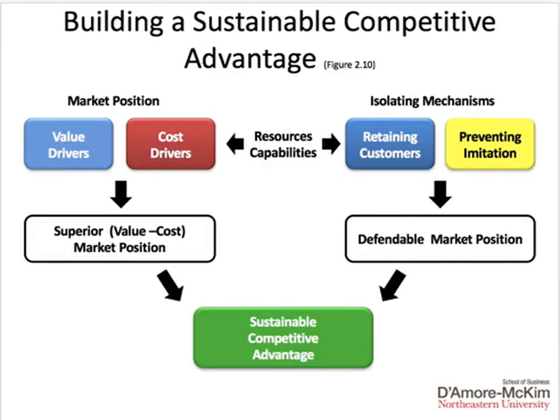As this slide shows, we're now going to begin focusing on the right half of the slide. In the left half, the firm has either used value drivers or cost drivers to create a superior market position — a superior V minus C — which leads to competitive advantage. Now firms will use isolating mechanisms to try and retain customers and prevent them from being stolen by rivals, while also preventing imitation so that rivals cannot copy the factors leading to their cost advantage or their differentiation advantage.